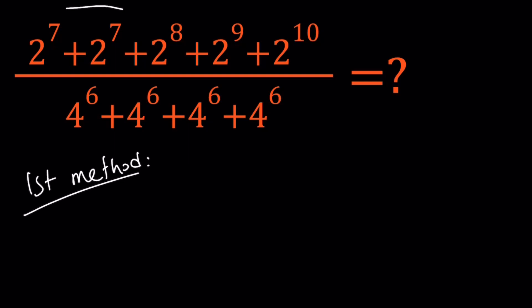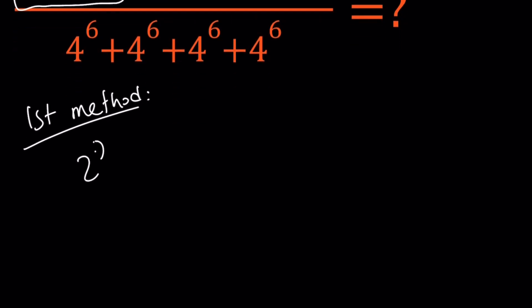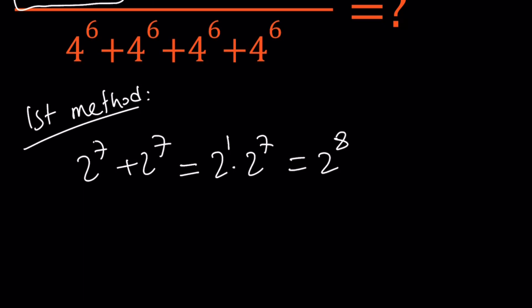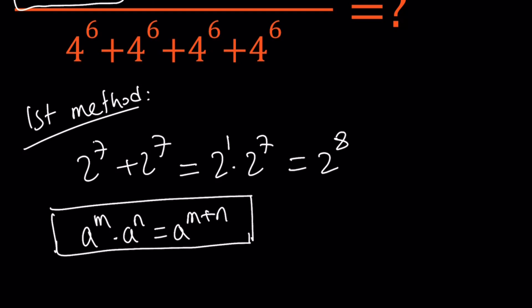I'm going to combine the first two terms because they have the same power. So 2 to the 7 plus 2 to the 7 — I know that it's 128 each, so 256 total, but that doesn't help us here. We're going to work with the exponents: 2 to the power of 7 added to itself is basically 2 times 2 to the power of 7. Since this is 2 to the 1st, you can write this as 2 to the 8th power. The property used here is: a to the m times a to the n equals a to the power m plus n — when you multiply powers with the same base, you add the exponents.